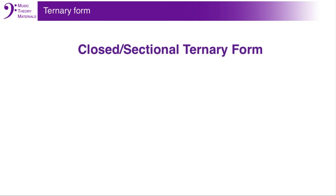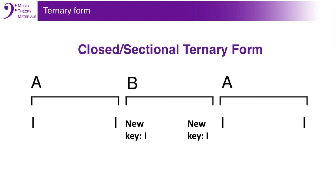In summary, ternary form is a three-part form that is usually closed or sectional, meaning that each section begins and ends on tonic. The textbook form can be diagrammed as shown below. The presentation of the thematic material, section A, begins and ends on tonic in the key of the piece. A middle section, B, with contrasting material, begins and ends on tonic in another key. And the return of the A material again begins and ends on the tonic in the key of the piece.